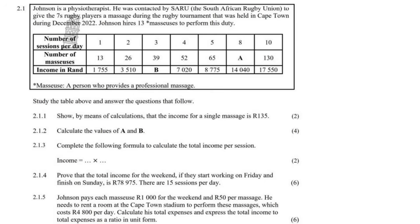The question says: study the table and answer the questions that follow. Show by means of calculations that the income for a single massage is R135. The table shows number of sessions — there are 13 masseuses each giving one massage, so 13 massages in total. Dividing the total price by 13 gives us R135.